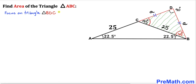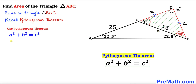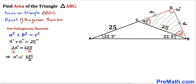Let's focus on triangle BDC and apply the Pythagorean theorem: A² + B² = C². In our case the hypotenuse is 25, so we have a² + a² = 25², which gives us 2a² = 625, and therefore a² = 625 divided by 2.